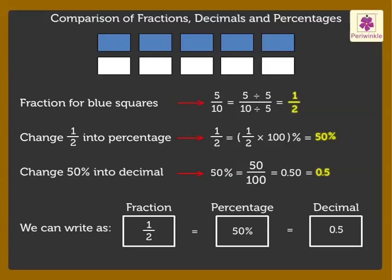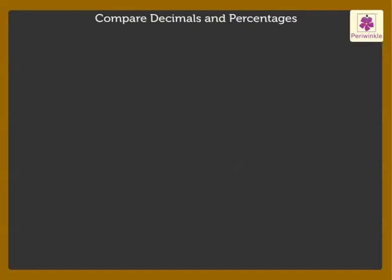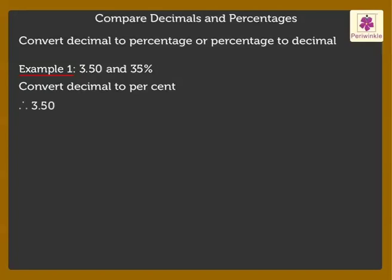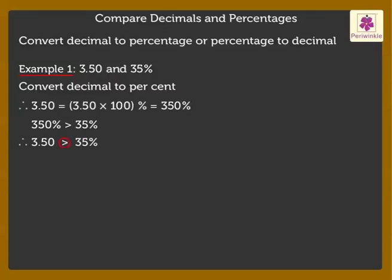Now, we will compare the fraction, decimal or percentage to find what is greater or smaller. To compare a decimal and a percentage, we either need to convert the decimal to a percentage or the percentage to a decimal. Let's compare the decimal 3.50 and 35%. Here, let's convert the decimal to a percentage. Therefore, 3.50 is equal to 3.50 into 100% is equal to 350%. 350% is greater than 35%. Thus, 3.50 is greater than 35%.